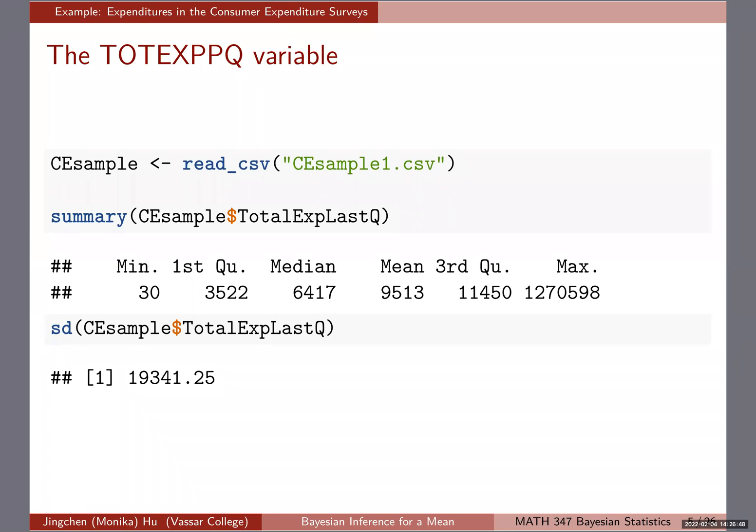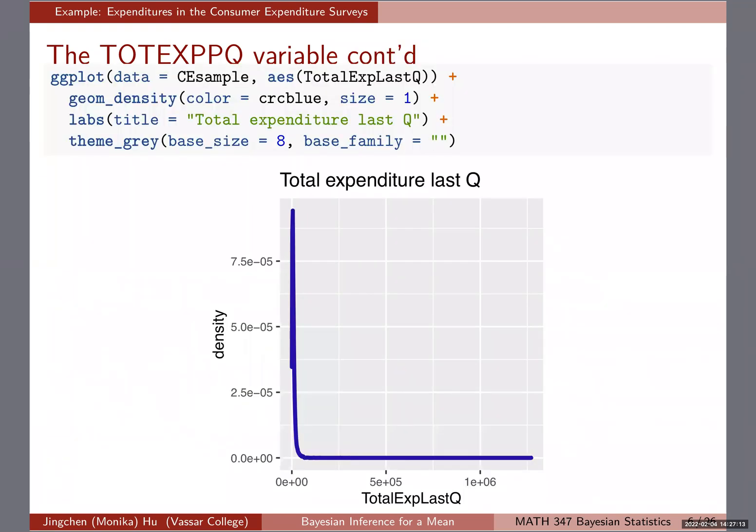It has a wide range - the minimum is 30 dollars, the maximum is quite large. The standard deviation is also pretty high, meaning there's huge variability in this variable. The values can range a lot, as we can see from the minimum to the maximum.